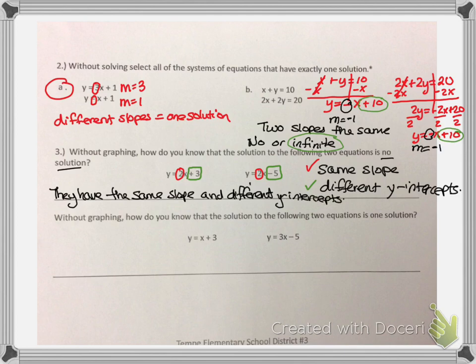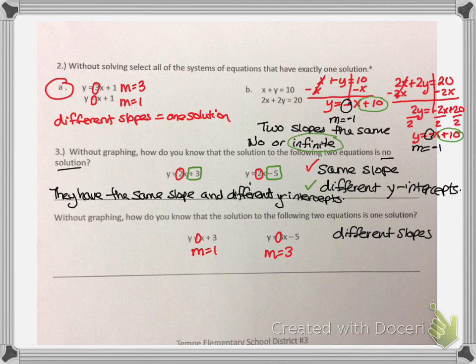The next question asks: without graphing, how do you know the solution to the following two equations is one solution? One solution means we are going to have different slopes. I want to find the slopes in both equations. This one has nothing in front of it, so its slope is 1. This one has a 3 in front of the x, so its slope is 3. I see that I do have one solution, and the reason is they have different slopes.